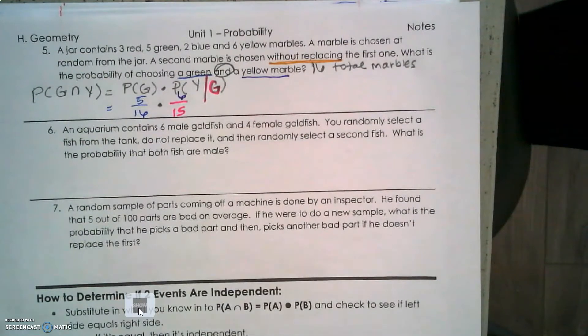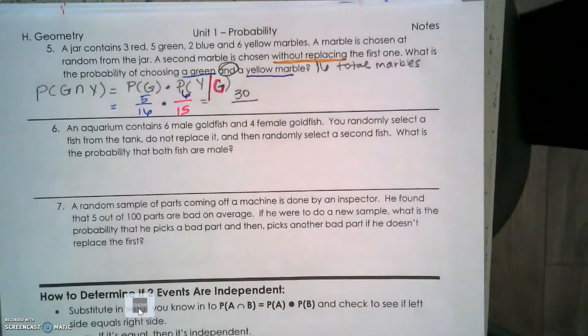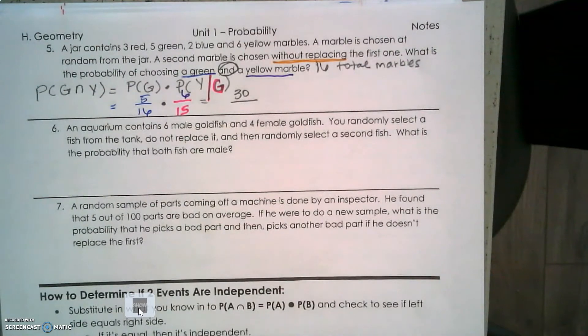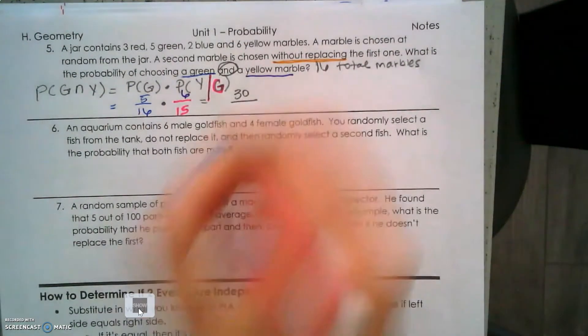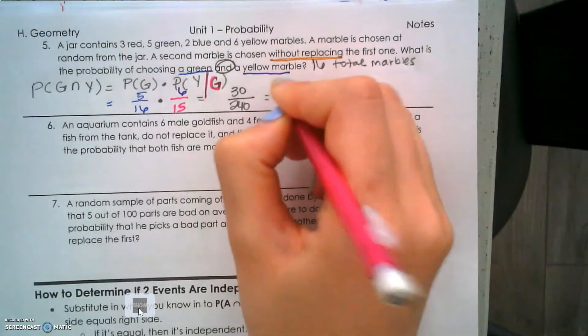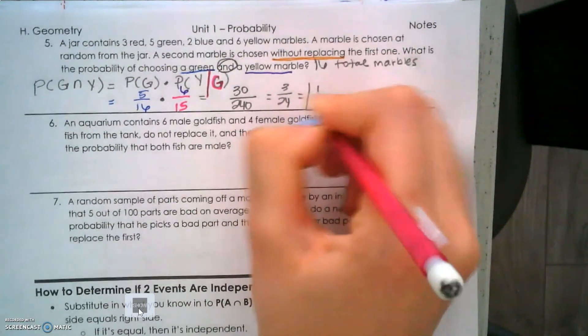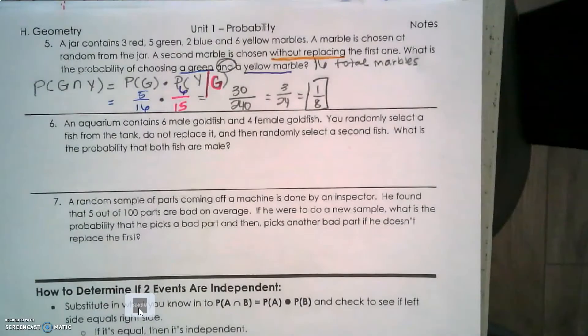We multiply across the top and bottom: 5/16 × 6/15. Simplifying gives us 1/8.